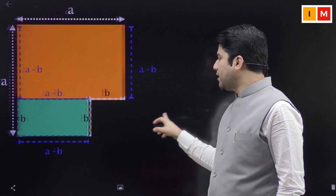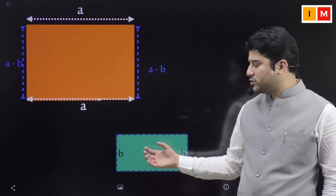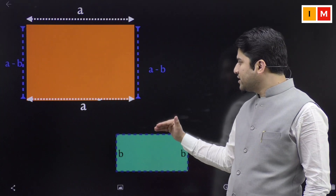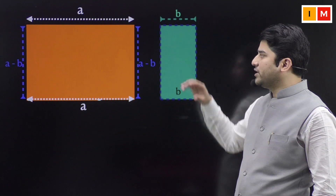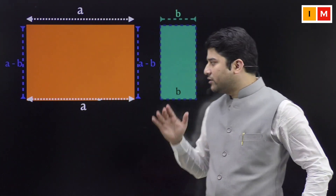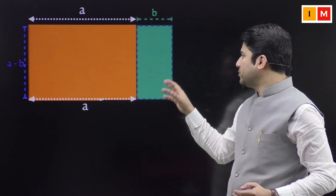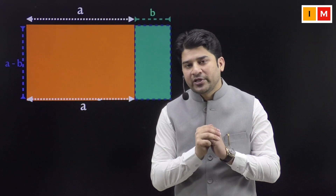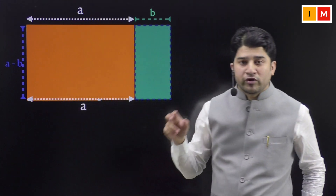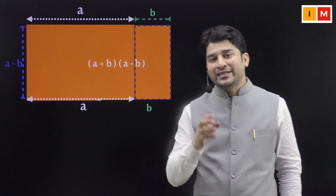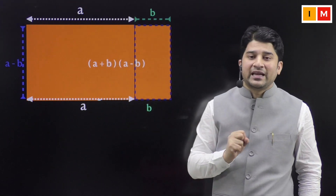Now what I'm going to do is carve this rectangle out — you have the a by (a - b) rectangle and the b by (a - b) rectangle. I am going to align them in such a way that both (a - b) sides align together, so I'm going to rotate one and place it alongside the other. Then I can fix these two rectangles together to make one bigger rectangle.